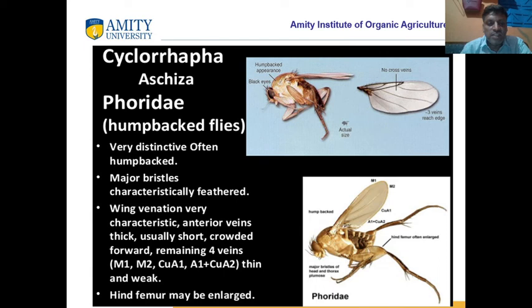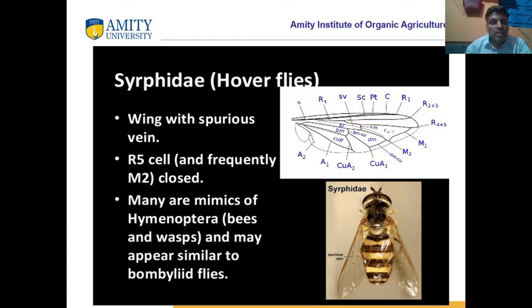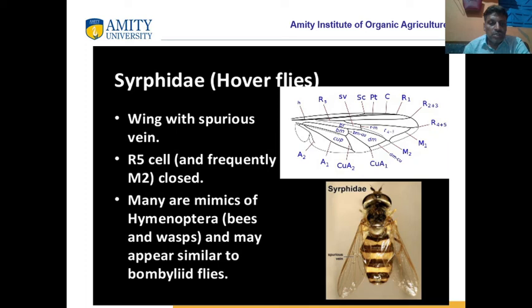In Cyclorrapha we study different flies including humpback flies and big-headed flies. The head is very big with compound eyes, and many ommatidia are the unit of visual perception for image formation. Syrphidae are hover flies with spurious veins and R5 cell frequently closed with media tube. Many are mimics of Hymenoptera — they match with Hymenoptera.